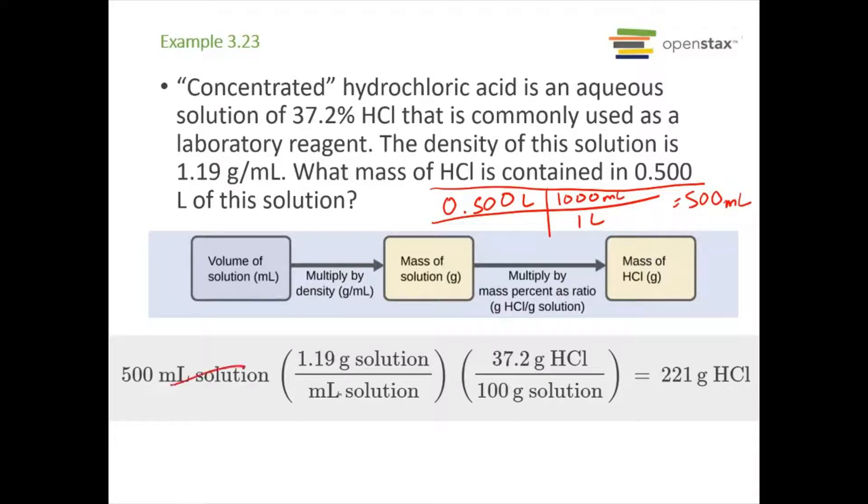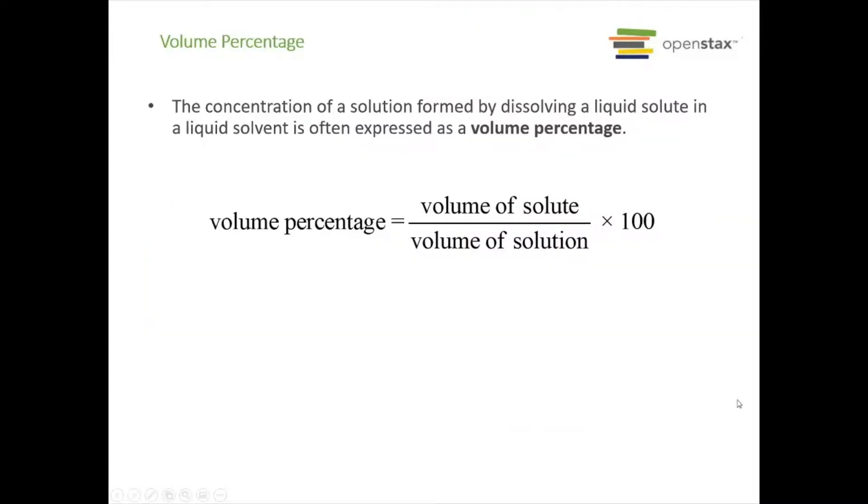We do that times its density. That gives us grams of solution. When we're told this percentage, that means we have 37.2 grams of HCl for every 100 grams of solution. Just like you would if you had a percentage on an exam, that's how we take these percent concentrations to use them in a calculation. We see grams of solution cancel out, and we're left with grams of HCl. We get that this 500 milliliters of solution, the HCl in it will weigh 221 grams.